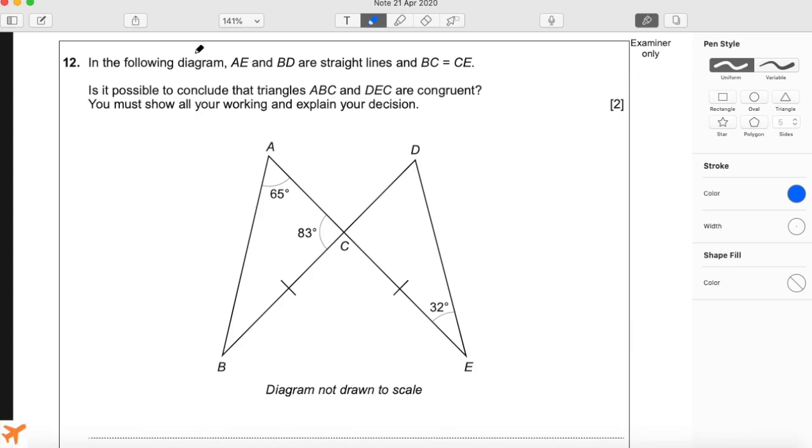Question 12. In the following diagram, AE and BD are straight lines and BC is equal to CE, which is shown by these two little perpendicular lines here.